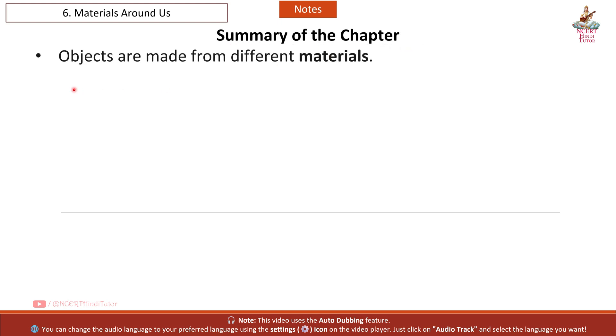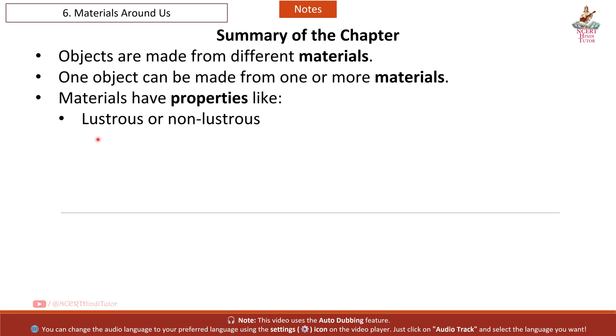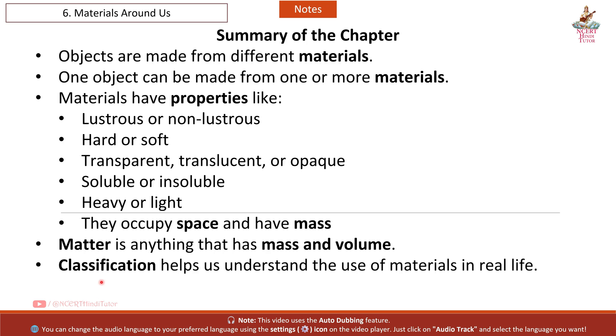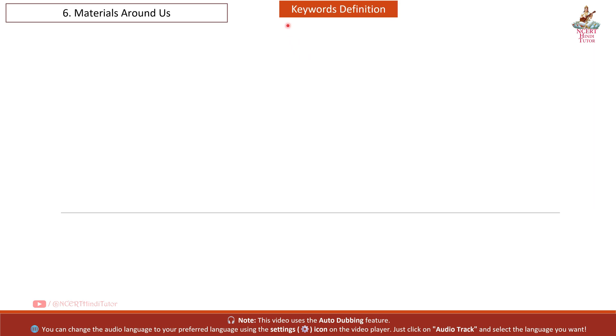Summary of the chapter. Objects are made from different materials. One object can be made from one or more materials. Materials have properties like lustrous or non-lustrous, hard or soft, transparent, translucent or opaque, soluble or insoluble, heavy or light. They occupy space and have mass. Matter is anything that has mass and volume. Classification helps us understand the use of materials in real life.